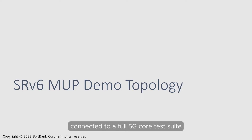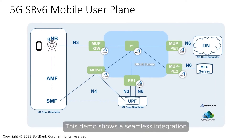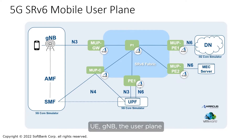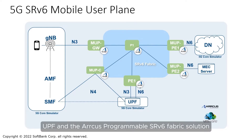Connected to a full 5G core test suite, this demo shows a seamless integration between the 5G control plane — SMF, AMF — existing RAN elements — UE, GNB — the user plane, UPF, and the Arcus programmable SRV6 fabric solution.